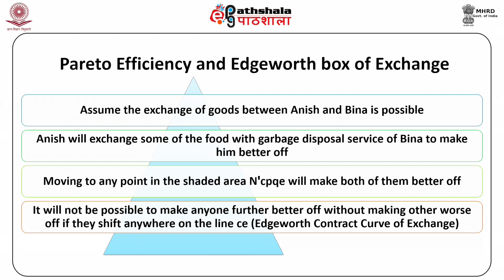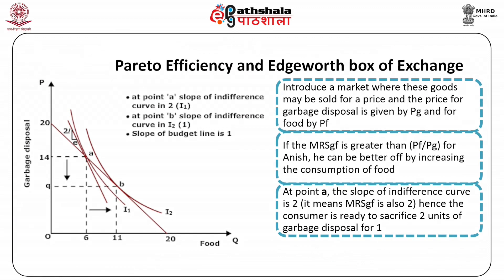It will not be possible to make anyone further better off without making the other worse off if they are on the line CE — the Edgeworth contract curve of exchange. On all points on this line, their indifference curves are tangent to each other. Therefore, moving to a higher indifference curve for one results in shifting to a lower one for the other. The question arises: how much food will be exchanged for garbage disposal?